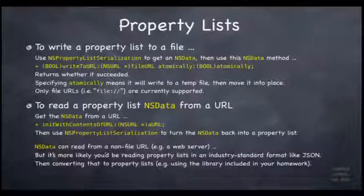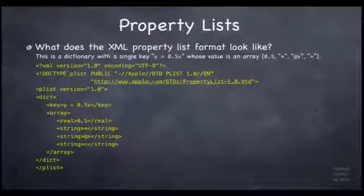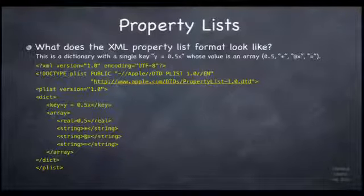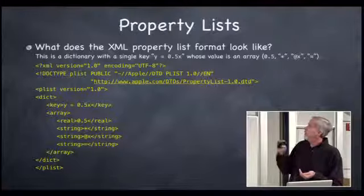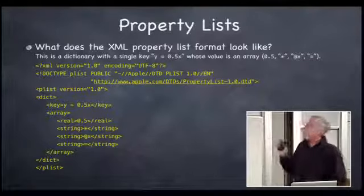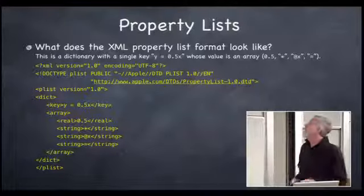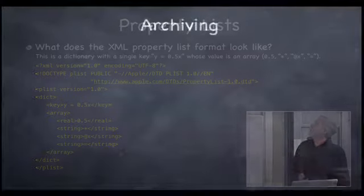Let's talk about two file formats. The XML property list format describes each node — dictionary, array — with its key and value, and it's quote human-readable in that it's ASCII text. JSON is another common format. NSPropertyListSerialization handles these conversions. The old-style ASCII format is mostly deprecated for demos.